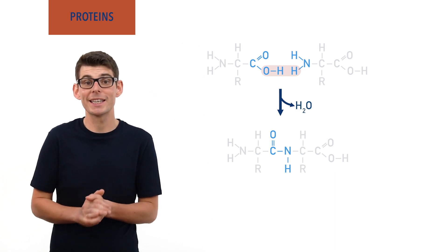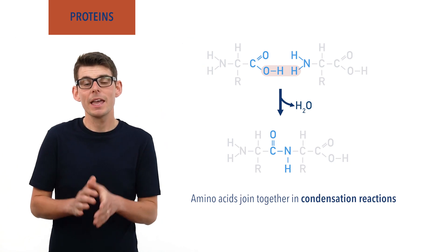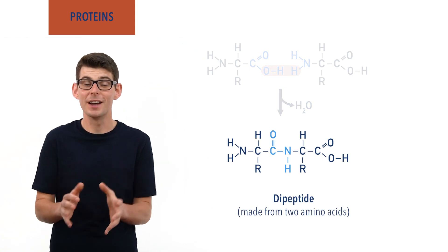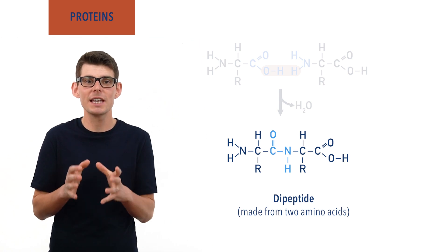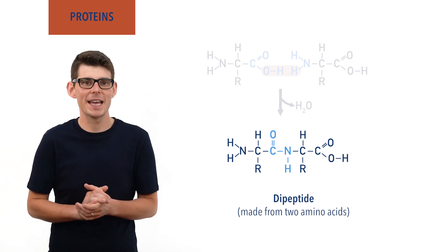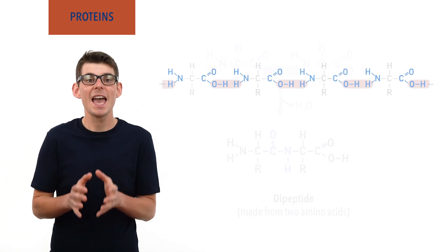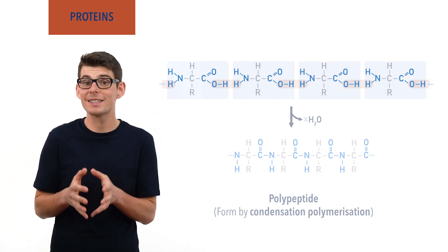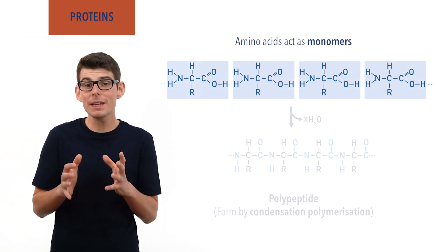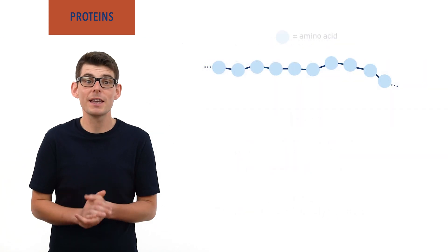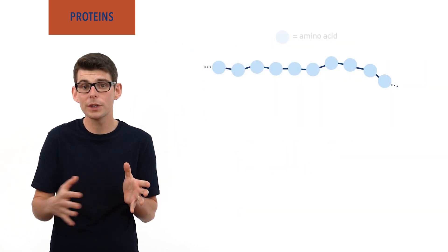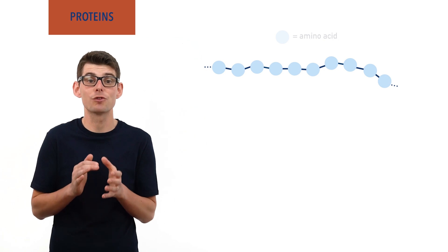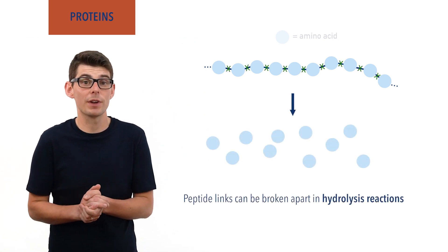This makes the forming of a peptide link a condensation reaction. If two amino acids join together in this way, a dipeptide molecule is formed. However, the amazing thing about amino acids is that they can just keep joining together over and over again. If more than two amino acids join together, a polypeptide is formed and the reaction is described as polymerization, with the amino acids acting as monomers. Polypeptides can be absolutely enormous, often being made up of thousands of amino acids all joined together in one long chain. The peptide links between amino acids can be broken apart in hydrolysis reactions, the exact opposite of the condensation reactions that form them.